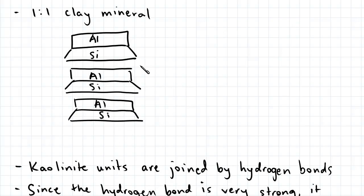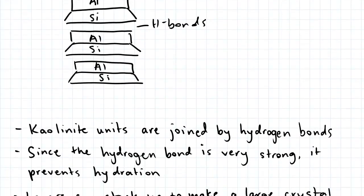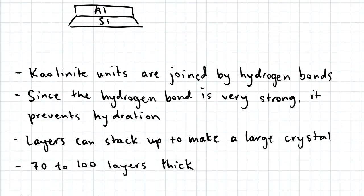The kaolinite units are joined by hydrogen bonds. And since the hydrogen bond is very strong, it prevents hydration. As a result, the layers can stack up to make a large crystal up to 70-100 layers thick.